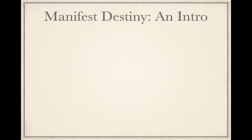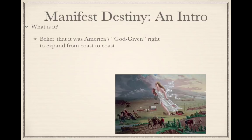Moving forward, a term you have to know for the study of American history — specifically this time period when we're moving west as a nation — is manifest destiny. Please highlight this phrase; it's something you have to know. Manifest destiny was the belief that it was America's God-given right to expand from coast to coast. Americans saw this almost as a religious calling that the American government and people must control this region.